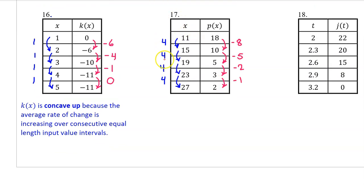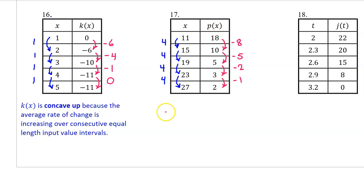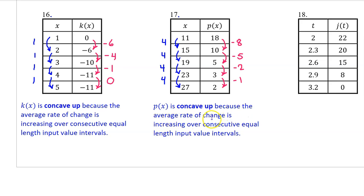For number 17, these are the changes in the input values and the changes in the output values. From negative 8 to negative 5 to negative 2 to 1, the output value changes are increasing — we are moving to the right on the number line. Since we have consecutive equal length input value intervals, the average rate of change is also increasing. Therefore, p of x is concave up. P of x is concave up because the average rate of change is increasing over consecutive equal length input value intervals.